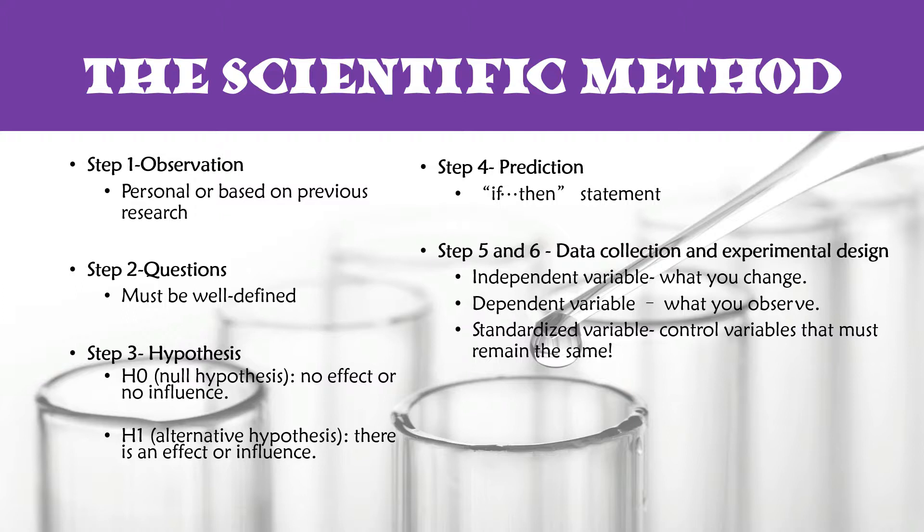Steps five and six are data collection and experimental design. If your question is not well defined, you will not be able to accomplish the experimental design portion of your study. So there are certain things that you need to keep in mind when you're coming up with an experimental design. One of which is the independent variable, and that is what you're manipulating, what you change in order to induce a response in the dependent variable. The dependent variable is often referred to as the response variable. This is what you are observing as an effect of the independent variable. And then of course there is also the standardized variables. These are the control variables that must remain the same because they have the potential to affect the dependent variable, and you want to know that what response you are seeing in your dependent variable is only an effect of the independent variable.